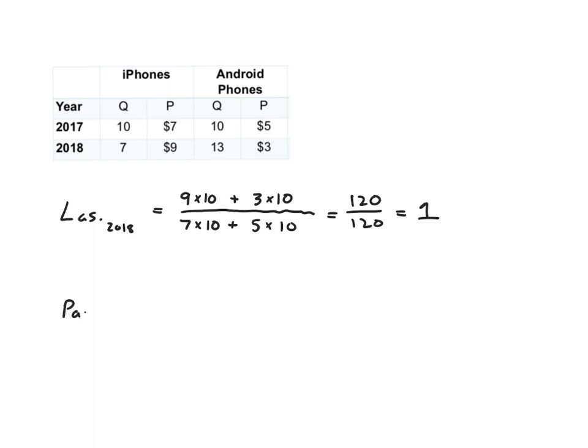Let's see what the Paasche index says. So we'll have Paasche 2018, and that formula was P1 dot Q1, so current year prices times current year quantities. So that's nine dollars times seven units plus three times thirteen units over P0 dot Q1. So past year prices, but current quantities. So that is seven dollars times seven units plus thirteen units times five dollars. And we get 102 over 114, which is about 0.89.